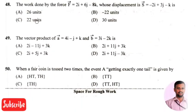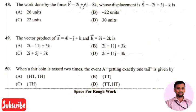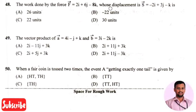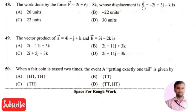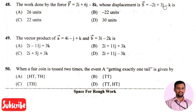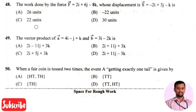The next question is the work done by the force vector two i plus six j minus eight k whose displacement vector s equals minus two i plus three j minus k — the right answer is option three, that is 22 units.